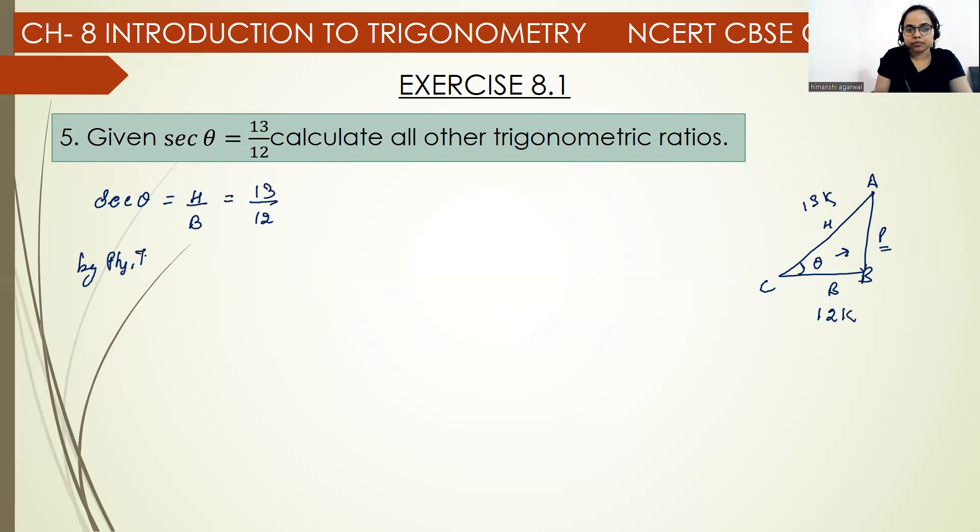By Pythagoras theorem, hypotenuse square is equal to perpendicular square plus base square. So 13k square equals perpendicular square plus 12k square. 169k square equals perpendicular square plus 144k square. So perpendicular square equals 169 minus 144. We take common k square and subtract: 169 minus 144 equals 25. So this is 25k square.